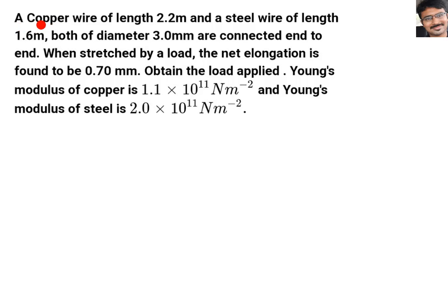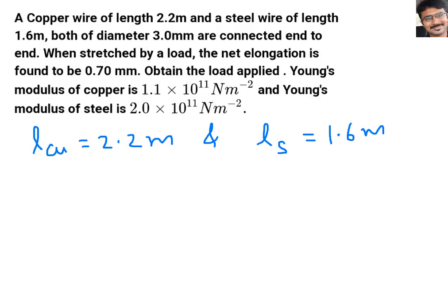Here a copper wire of length 2.2 meter and a steel wire of length 1.6 meter are given. Length of copper wire is 2.2 meter and length of steel wire is 1.6 meter. I wrote both values here.